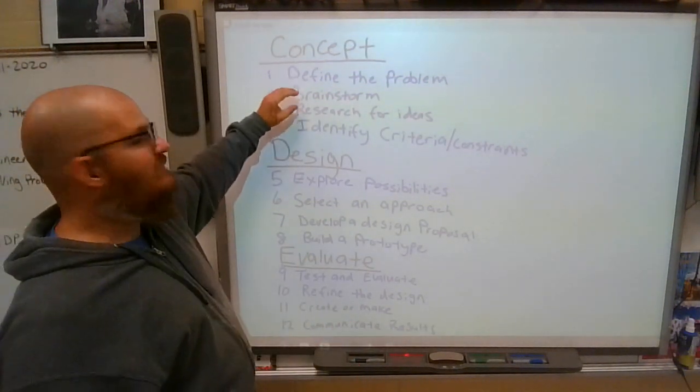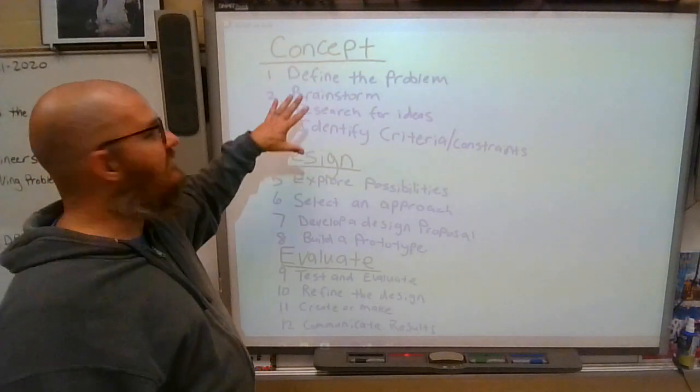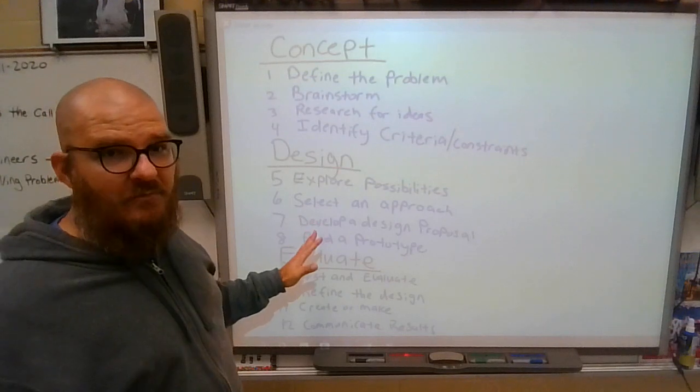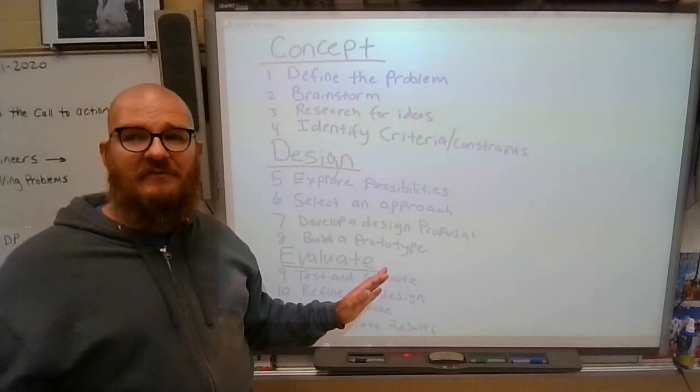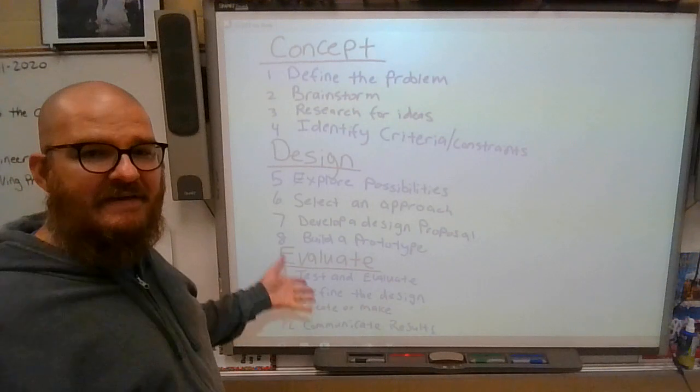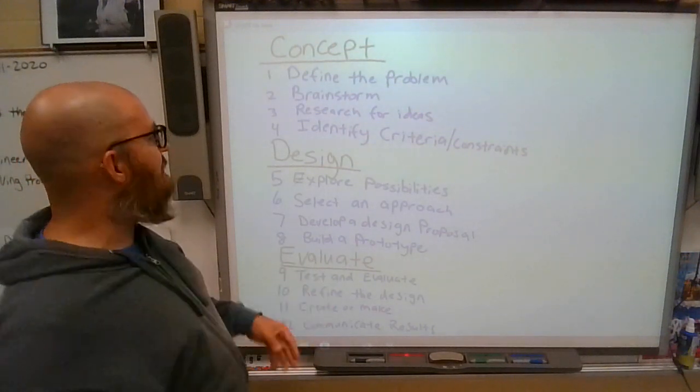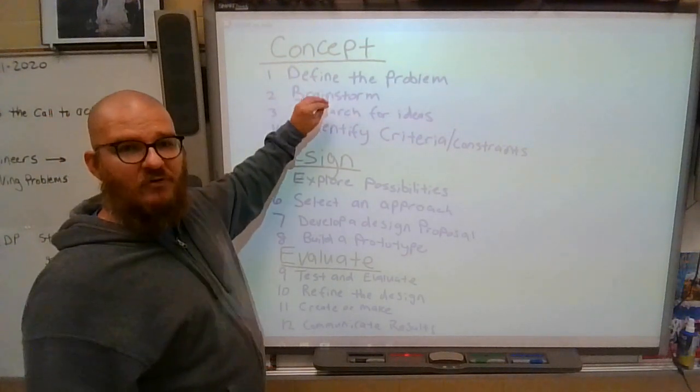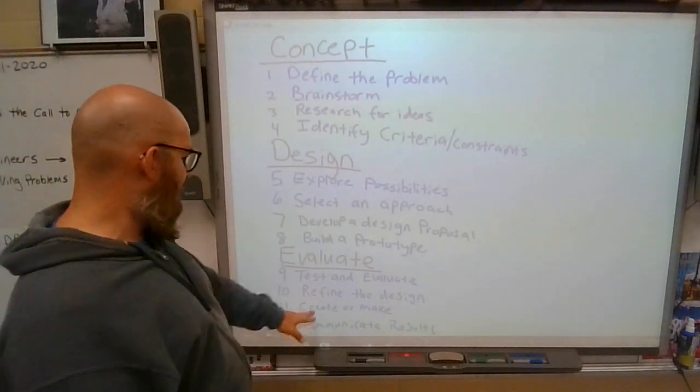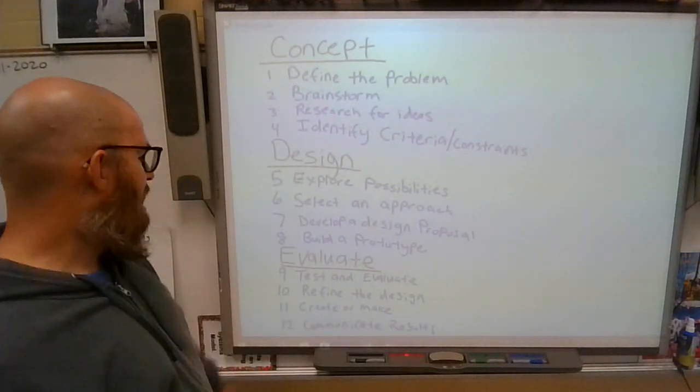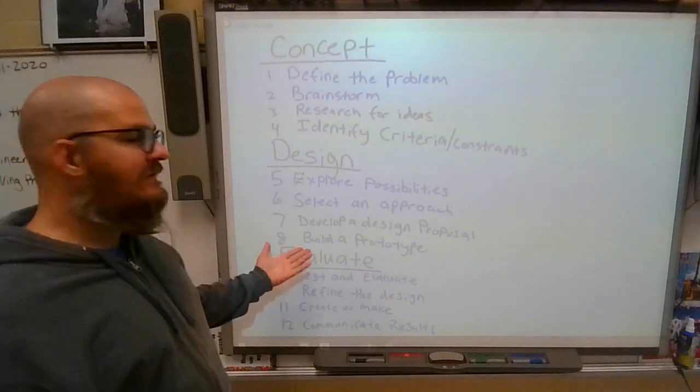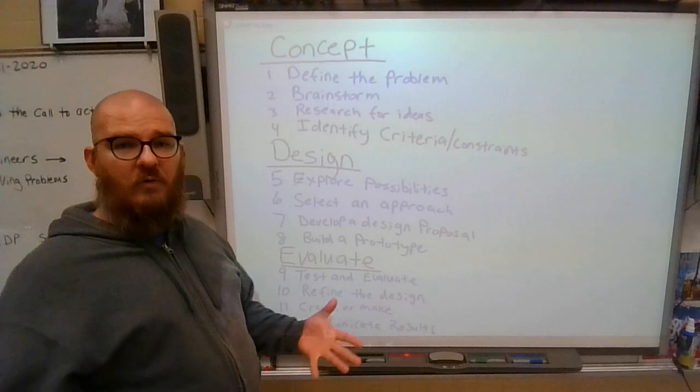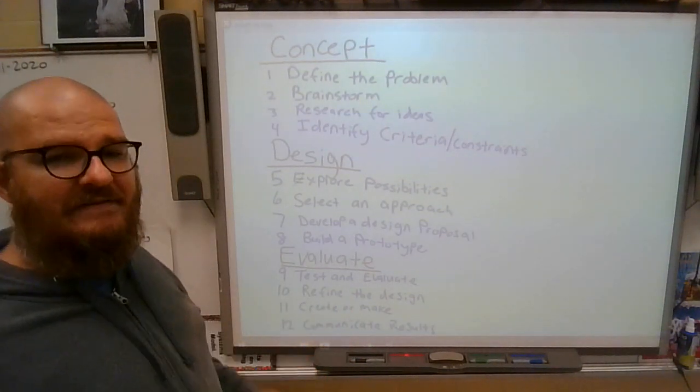You can simplify some of them and group them. You'll find that the twelve-step engineering design process is not what everybody uses. Some people use a five-step, some people use a six-step, and some people have a seven-step. Depending on what they group together, you might put researching and brainstorming together. Well, now we're down to eleven. Take this one out, ten. Take this one out, nine steps. So just learn these twelve steps and know where they fall in the order and you will be a success in this class.